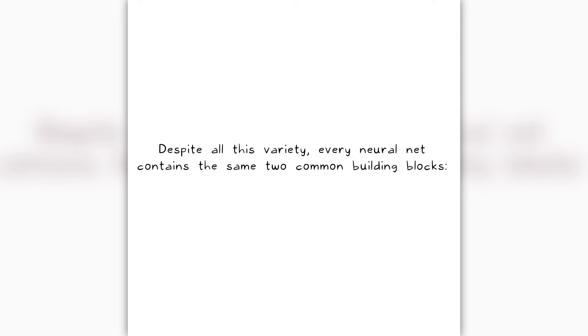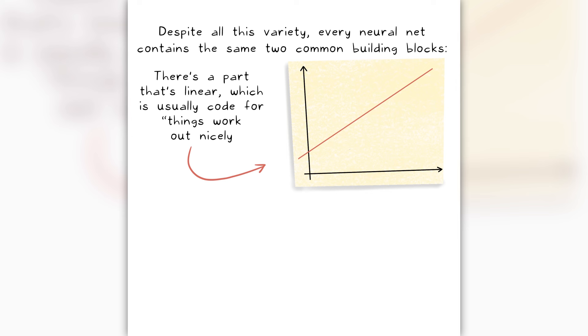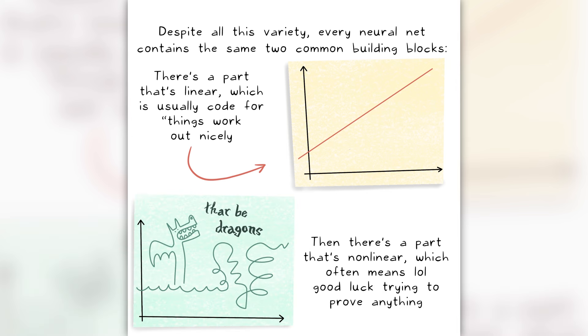Despite all this variety, every neural net contains the same two common building blocks. There's a part that's linear, which is usually code for things work out nicely. Then there's a part that's non-linear, which often means good luck trying to prove anything.